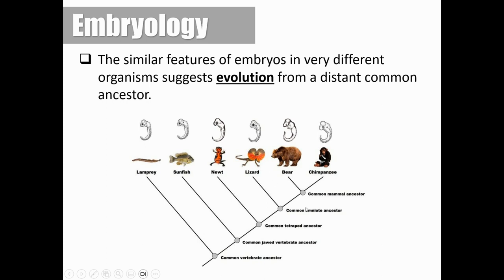We can use something like a cladogram or a phylogenetic tree to sort this out and make sense of it all. I'm not going to explain how this works in this lesson because I have a whole lesson devoted to reading cladograms. But just know that we have different organisms here, and we can see through speciation how these different species came to be, but they all share a common ancestor. For the chimpanzee, the bear, and the lizard — while they might look very different — if you go all the way back to their embryos in the earliest stages of development, you'll notice quite a few similarities. Scientists say this provides evidence that evolution happens.